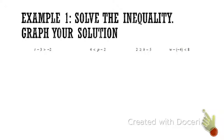In these problems, what we're doing is solving for the variable, and we do this very similar to the way that we would solve an equation. On the first problem, I have t minus 3 is greater than negative 2. So I would add 3 — do the opposite operation to both sides — and t is greater than 1.